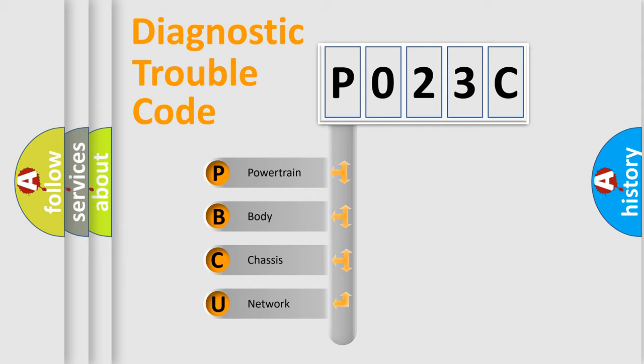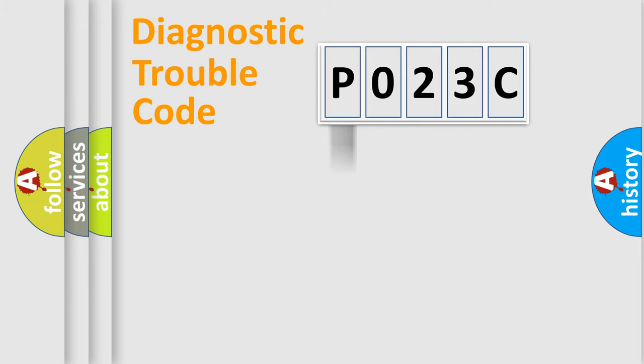We divide the electric system of automobile into four basic units: Powertrain, Body, Chassis, Network. This distribution is defined in the first character code.